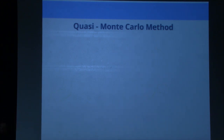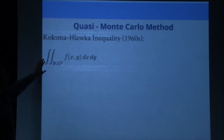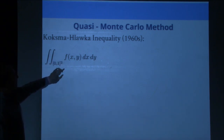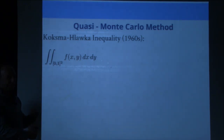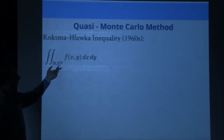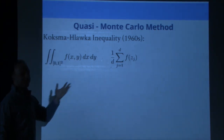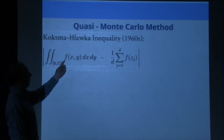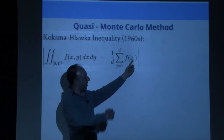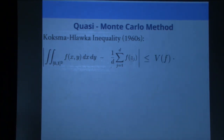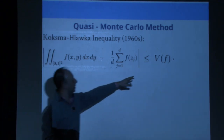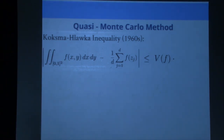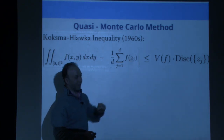The quasi Monte Carlo method is based on the Koksma-Hlawka inequality. You want to integrate a function over the torus numerically by sampling at a bunch of points and averaging. The inequality says the error is bounded by the product of two things: the first variation of the function (roughly its first derivatives in every variable) times the discrepancy of the set of sampled points.